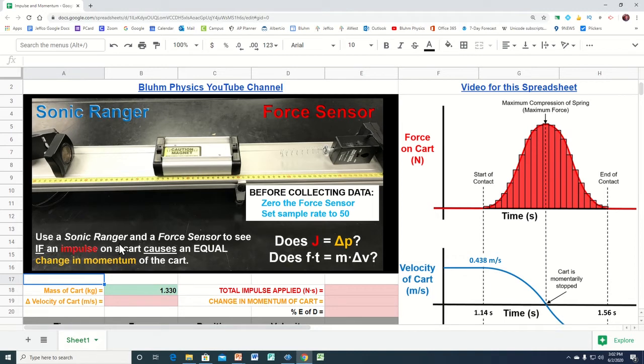The goal of this spreadsheet is to use a Sonic Ranger and a force sensor to see if the impulse on a cart causes an equal change in momentum of that cart. When force is put onto that cart for a period of time, force times time is impulse, which we abbreviate with the letter J, and that value should equal the change in momentum of that cart. Mass times change in velocity is how we calculate change in momentum. We use a P for momentum.